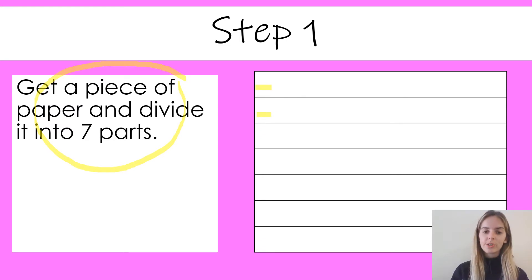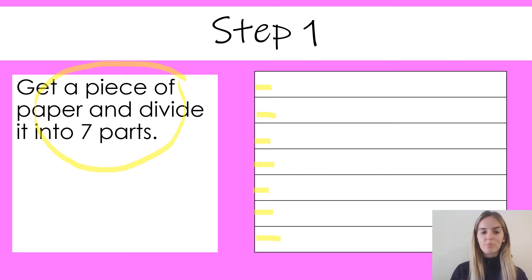Let's count my piece of paper and make sure that I have seven parts. One, two, three, four, five, six, seven. There are seven parts. We have completed step one.